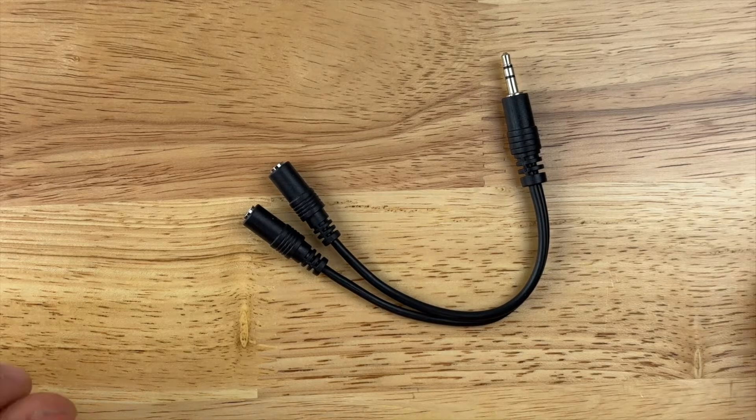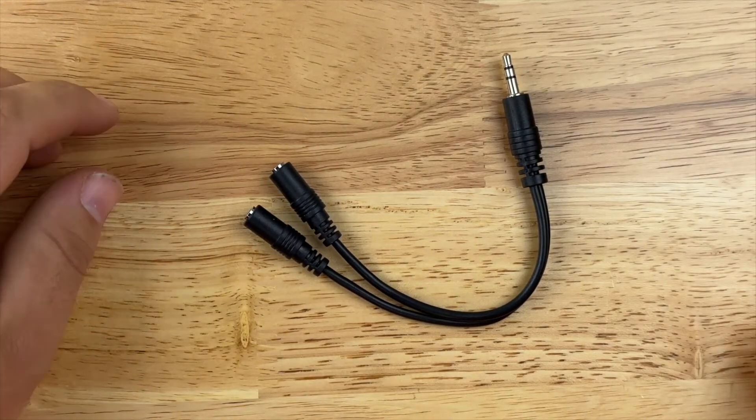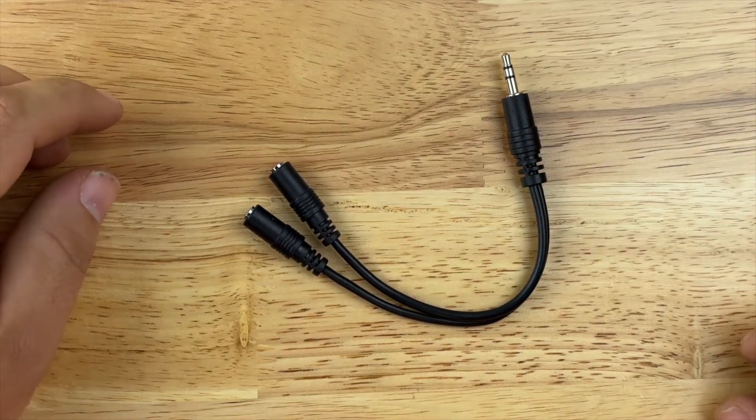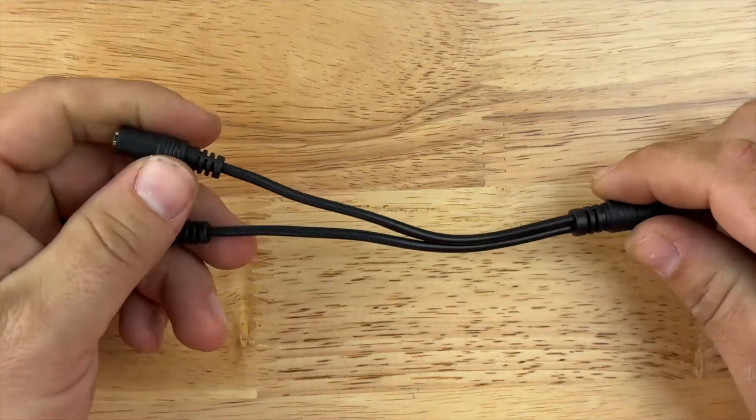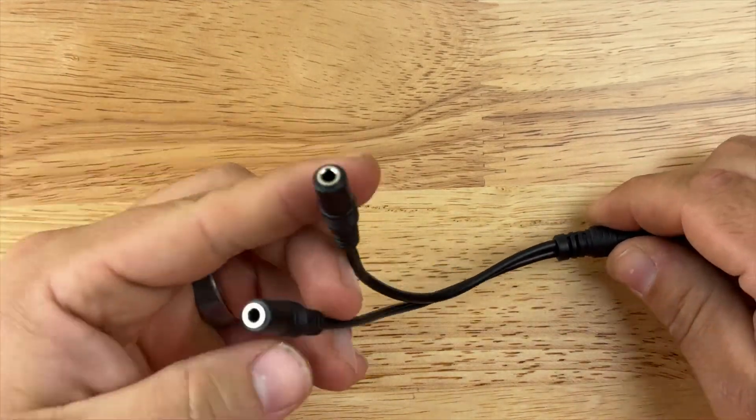All right, so you're getting ready to get your 3.5 millimeter headphone jack ready to be inserted into a toy. When we buy these, we buy splitters that allow us to have two female ends. We actually don't use the male end.